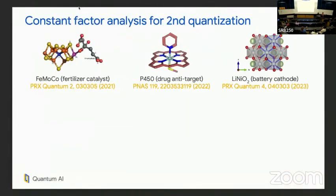As a preliminary before we get into the fusion modeling, one thing that we've done at Google is develop a small industry of analyzing constant factors in algorithms for physical simulation. Physical simulation is probably a very valuable application of quantum computers. Our goal is to understand precisely how long the best quantum algorithms are going to run for simulating important problems in condensed matter physics or specifically chemistry.